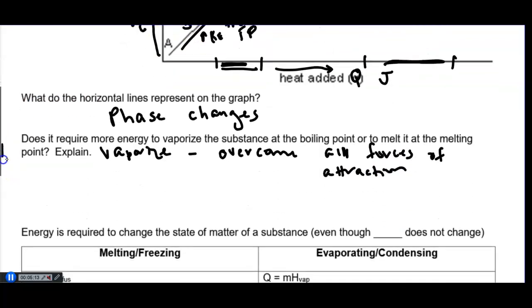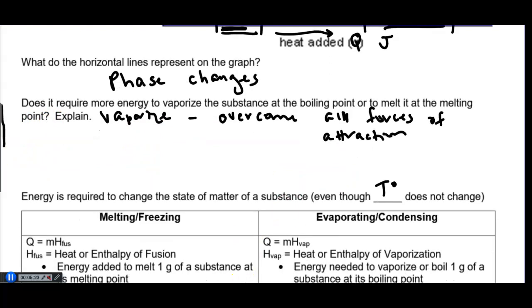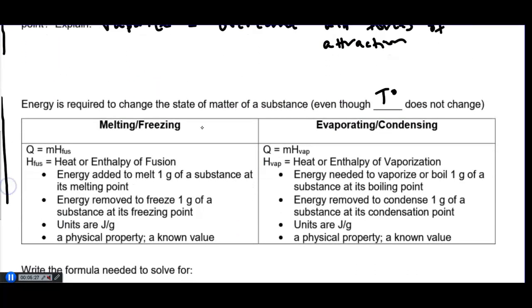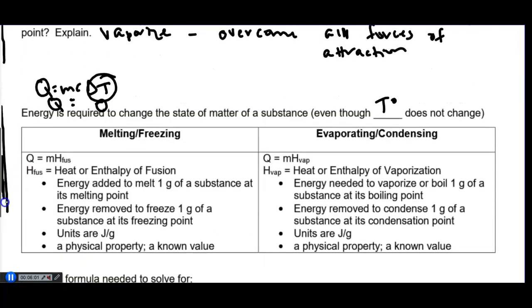Energy is required to change matter's phase even though temperature does not change, because all of that energy is going into the phase change. To calculate the amount of energy needed to melt or evaporate, we can't use Q = mcΔT because if there's no change in temperature and we plug in zero for ΔT, Q always equals zero. But we know from the graph that there is some energy change during a phase change, so Q = mcΔT doesn't work for that.